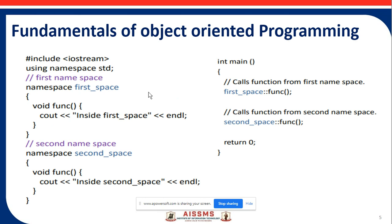Here is a program example for namespaces. First, we include the header file '#include iostream', then 'using namespace std'. The first namespace is declared as 'namespace first_space', with a function defined inside using cout. A second namespace 'namespace second_space' is declared similarly. In main, we call functions from each namespace using scope resolution.